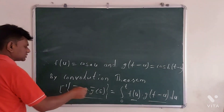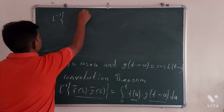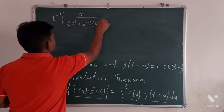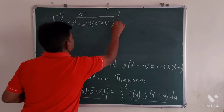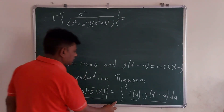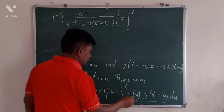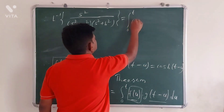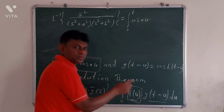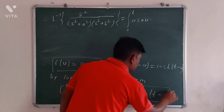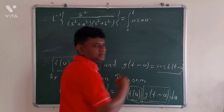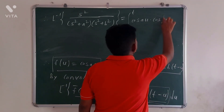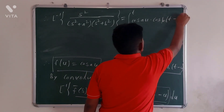Therefore, L inverse of s squared over (s squared plus a squared) times (s squared plus b squared) equals the integral from 0 to t of f(u) times g(t minus u) du, which is the integral from 0 to t of cos(au) times cos(b times (t minus u)) du.